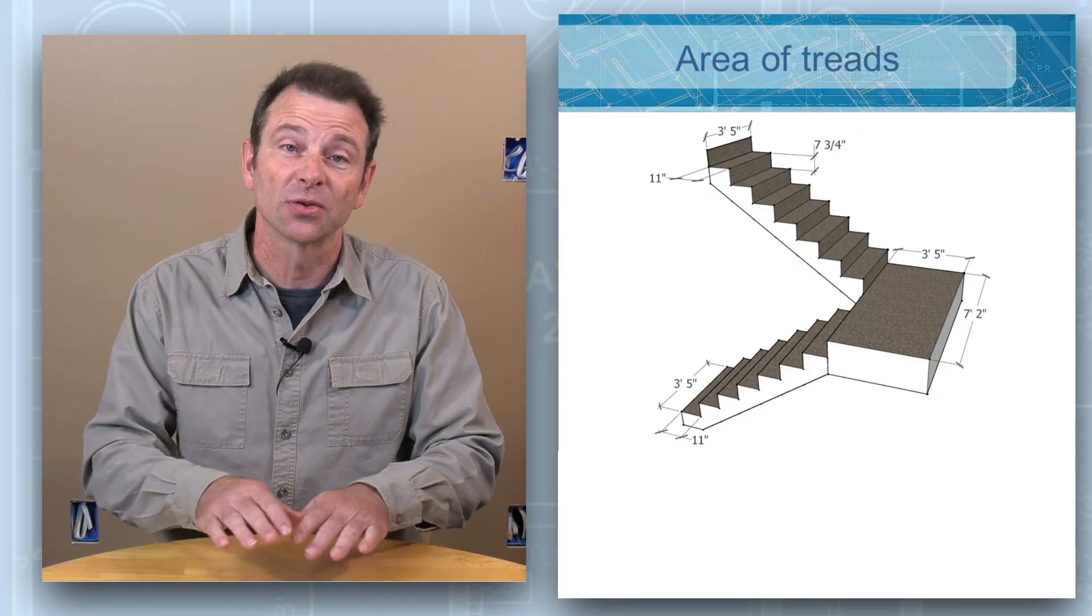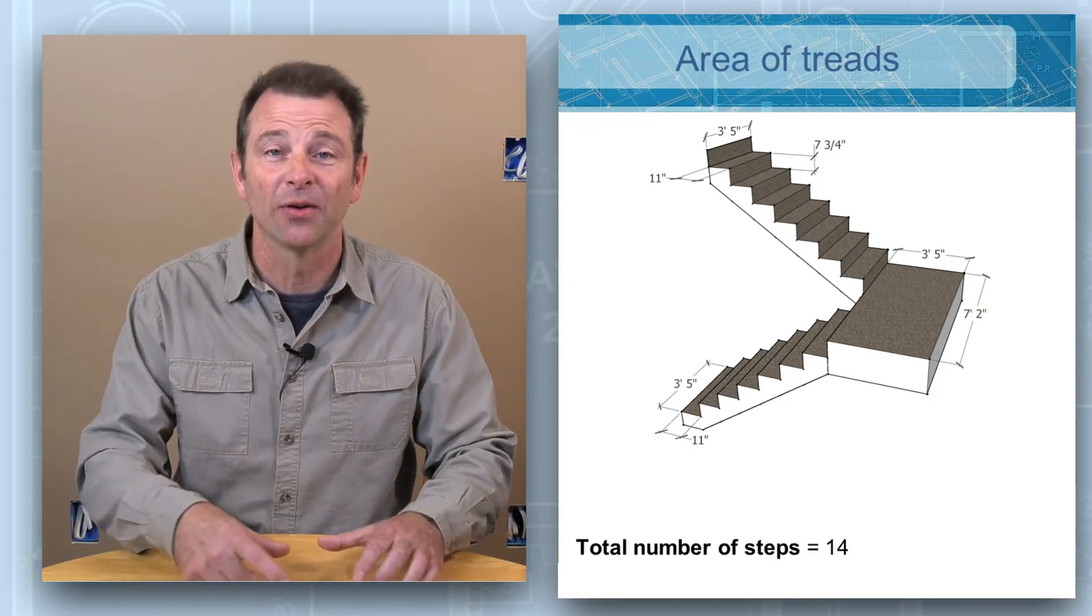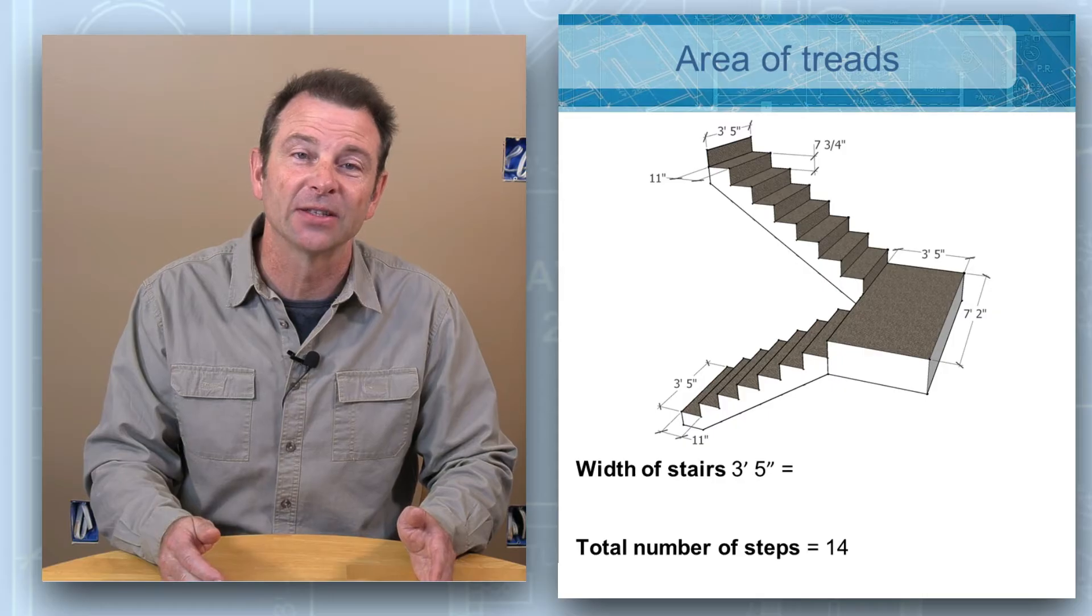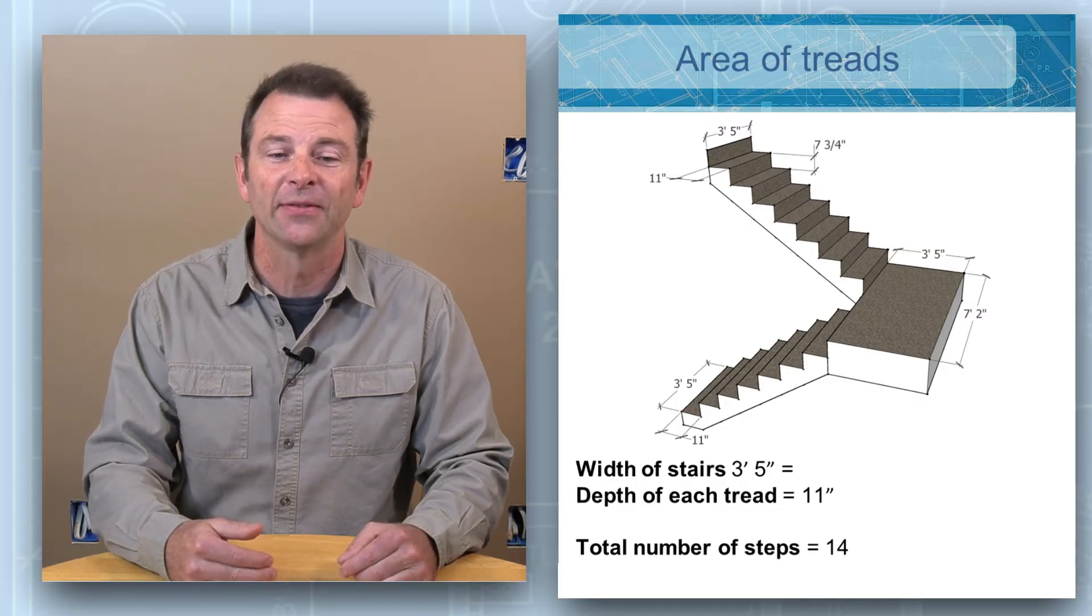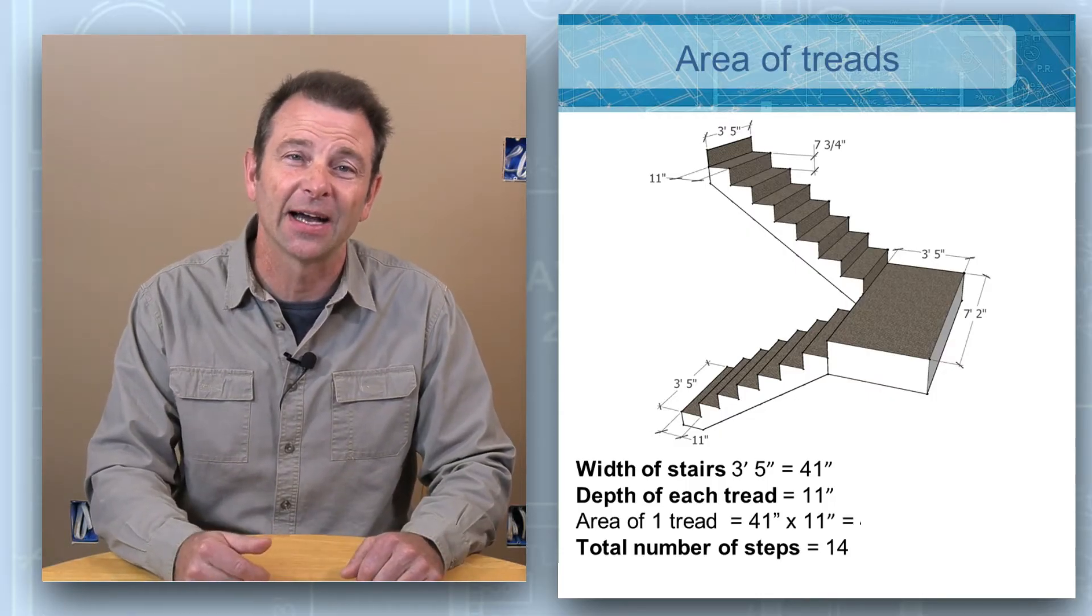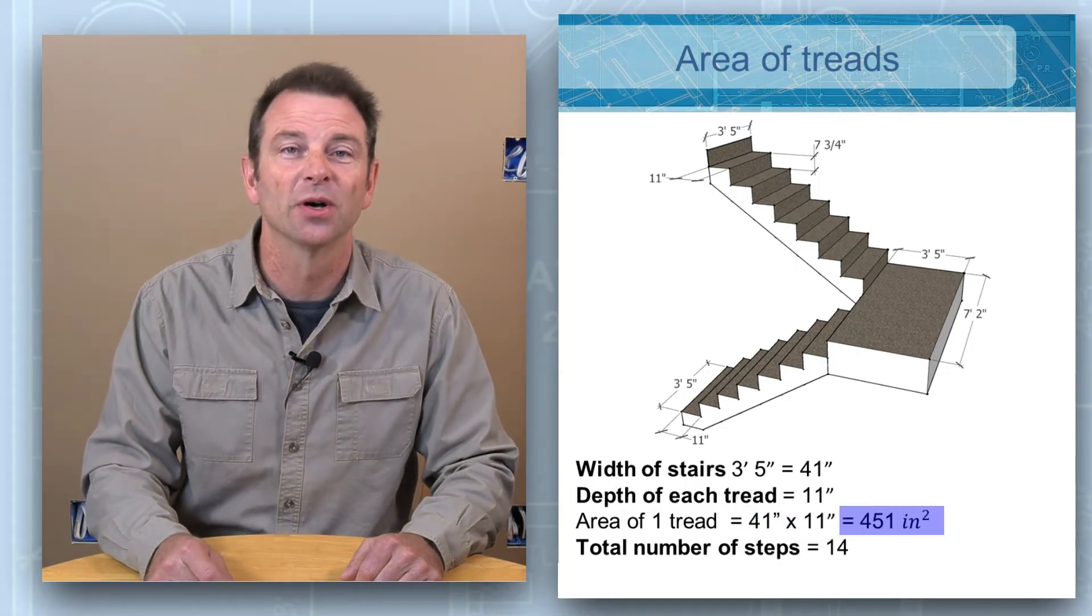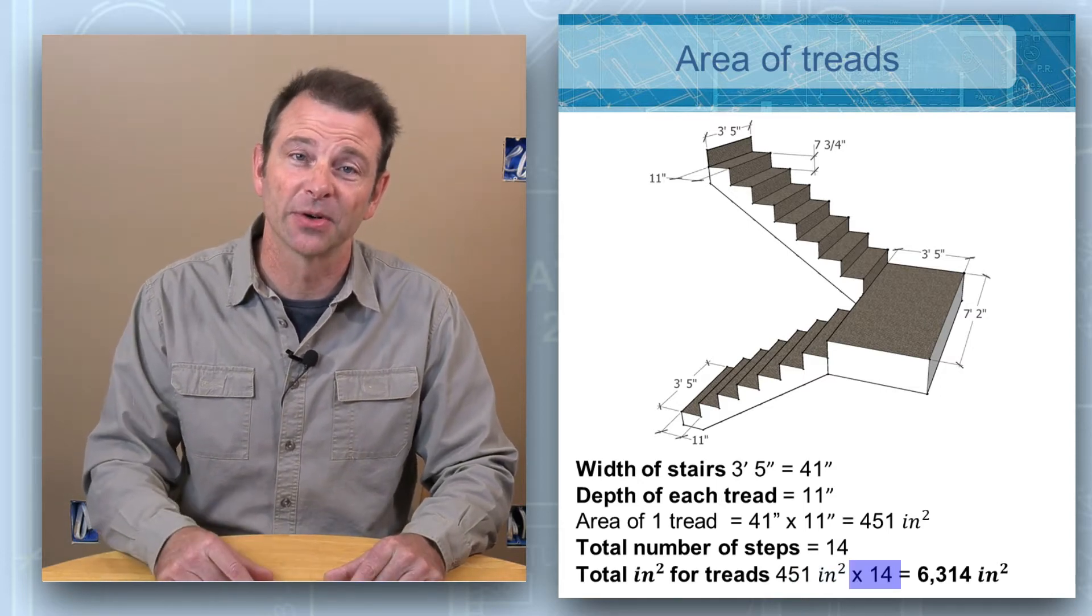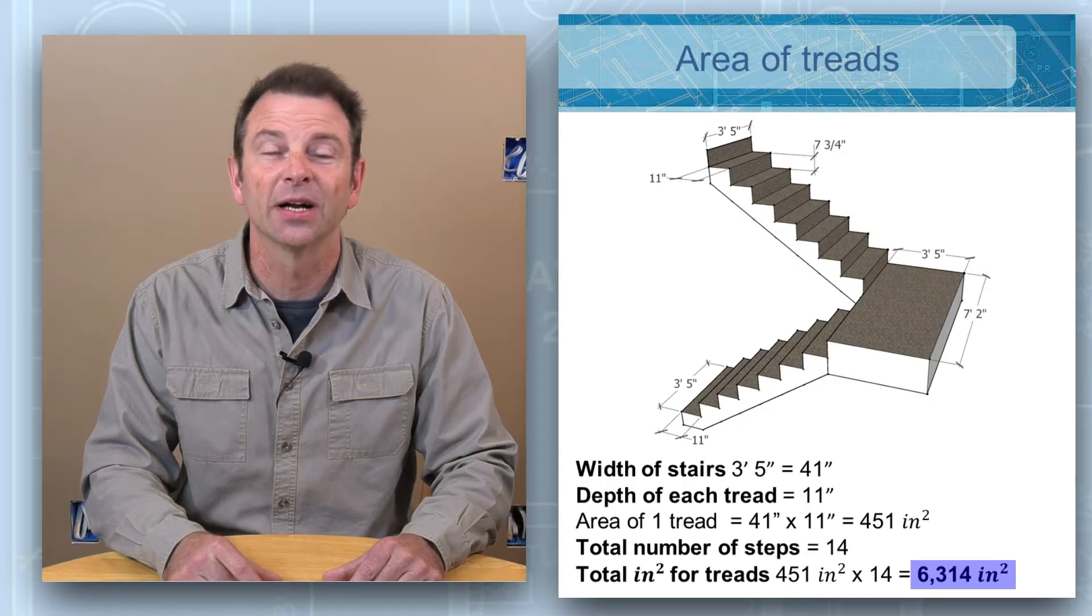So our stairs in this case or our treads are going to be a count of 14. So we will calculate our stairs and multiply that number of one single tread area by 14. And it just so happens that our stairs are three feet five inches wide. They're also each tread is 11 inches deep. So we can multiply our three foot five, which we can convert to 41 inches to make this problem go easier. And we can multiply that times our 11 inches. That's length times width. That's 41 times 11 inches. That gives us 451 square inches. If we multiply 451 square inches per tread times the total number of treads, which is 14, we will come up with our total square inches for all of our treads at 6,314 square inches.